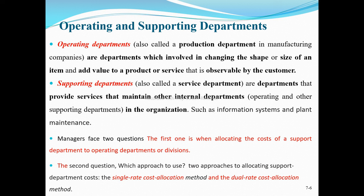Since supporting departments incur costs but are not direct production departments, their costs — which are indirect in nature — should be allocated to the operating departments. Operating department costs can then be treated as direct costs traceable over the cost object. The key question when allocating supporting department costs is: which approach to take — a single rate approach or a dual rate approach?